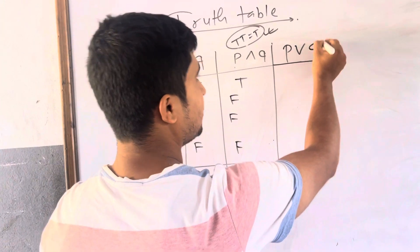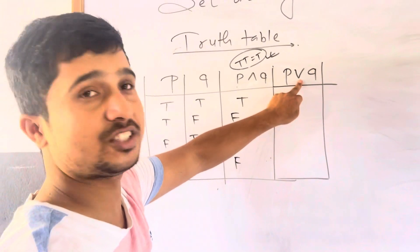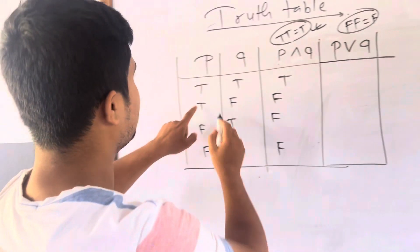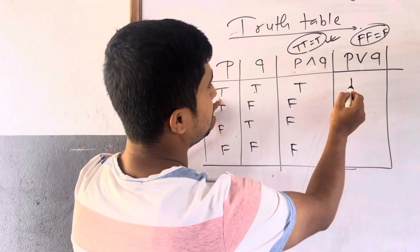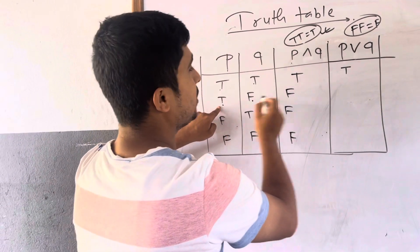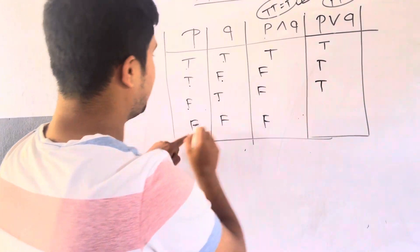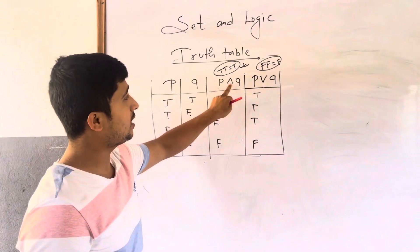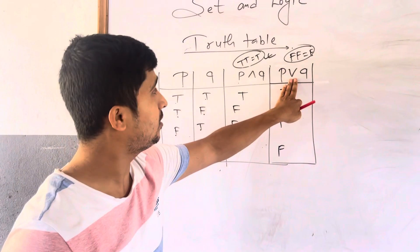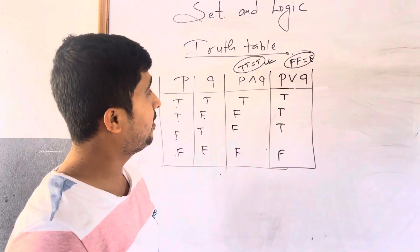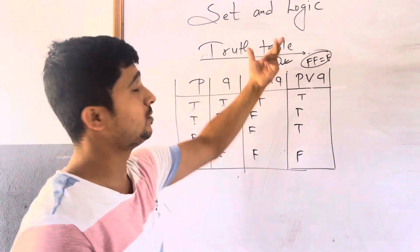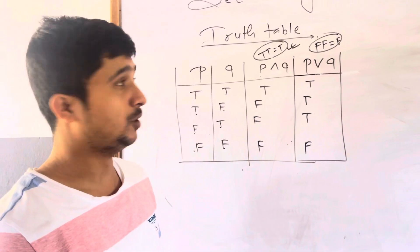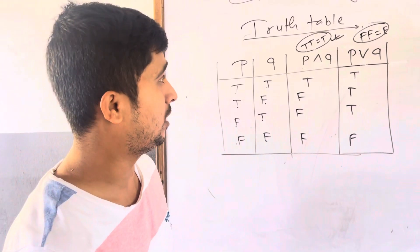Now for disjunction P∨Q, remember: it is false only when both are false; otherwise true. So: true∨true = true, true∨false = true, false∨true = true, false∨false = false. So let's complete the truth table of conjunction and disjunction in this video. In the next video, we will talk about the truth table of conditional, biconditional, and much more. So watch the next episode as well.